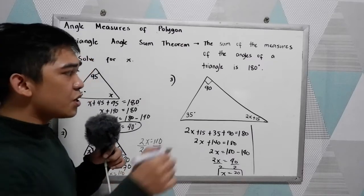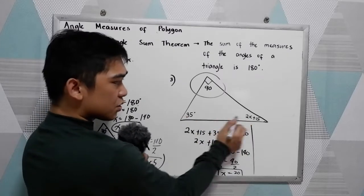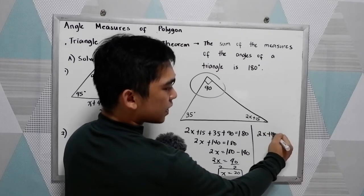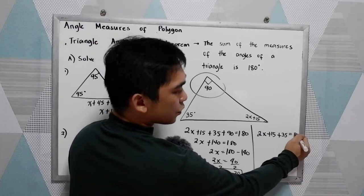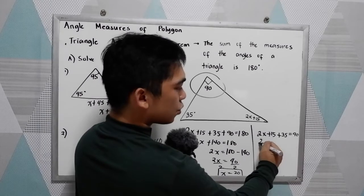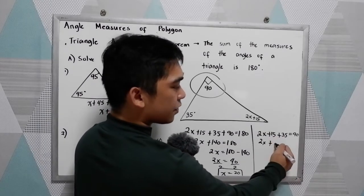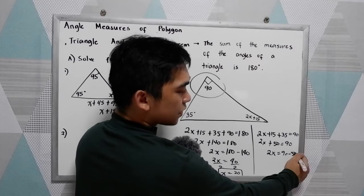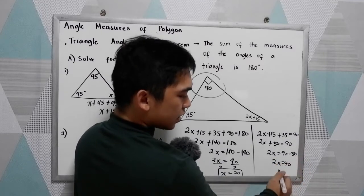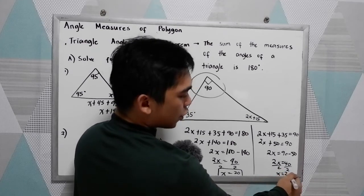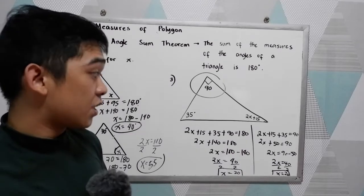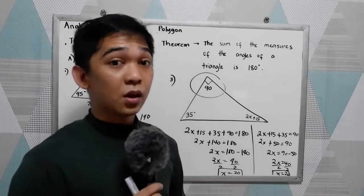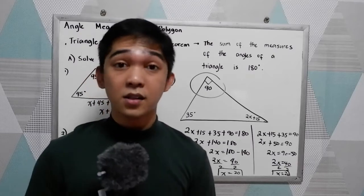The other way around: we know that the right angle is 90 degrees, so the sum of the other two angles equals 90. We can say 2x plus 15 plus 35 equals 90. So 2x plus 50 equals 90. Move 50 to the right as minus 50, so 2x equals 40. Divide by 2: x equals 20. We still come up with the same answer. That is the Triangle Angle Sum Theorem — the sum of angles in a triangle is 180.